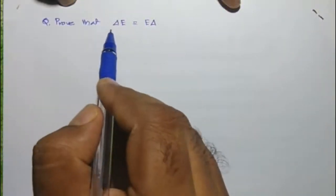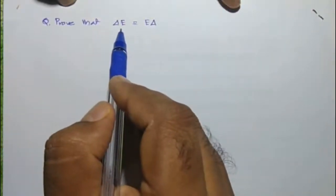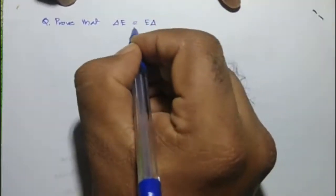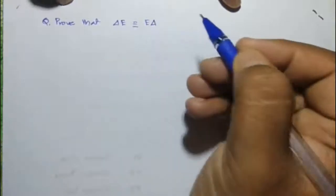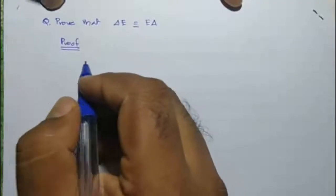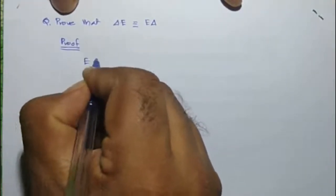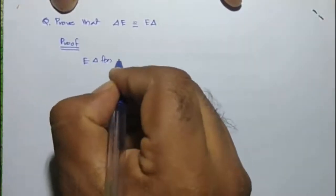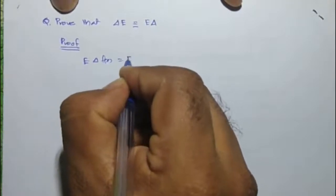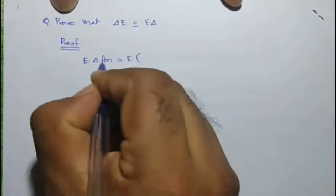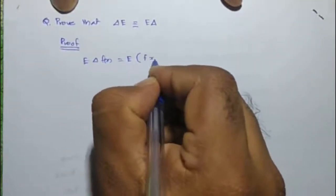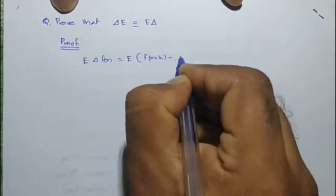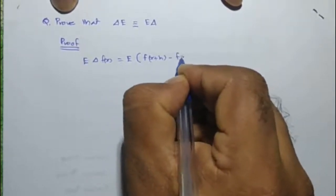Prove that delta E is equivalent to E delta. We know that E delta f of x equals E into delta f of x, which is f of x plus h minus f of x.